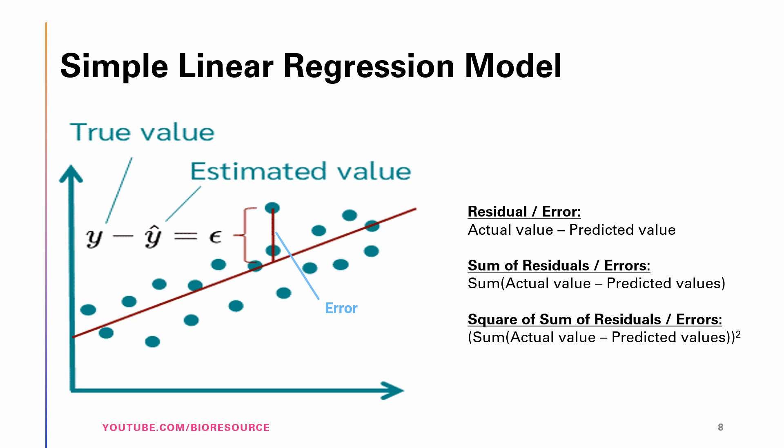Each data point has one residual, and the sum of all the differences is known as the sum of residuals or errors. The aim is to minimize the error. The residual or error is the difference between the actual value and the predicted value, whereas the sum of residuals is the sum of differences between the actual and predicted values. The square of the sum of residuals is the square of the sum of those differences.